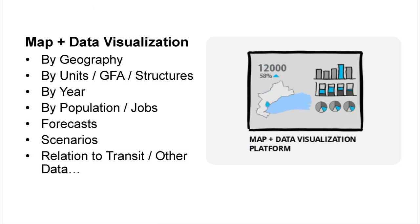On map and data visualization: right now a growth forecast is essentially a spreadsheet joined with a shapefile to create a map. I'd like to see this more streamlined — perhaps a dashboard broken down by geography, showing number of structures, units, or total GFA, filterable by land use and year, with populations and jobs related to units. You could switch between different forecasts and run different scenarios, and see this in relationship to major transit initiatives or capital projects.